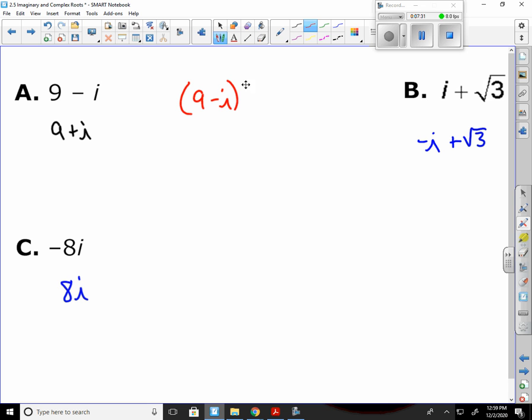When I have 9 minus i and I multiply it times 9 plus i, it gives me a quadratic of sorts. I just do the same thing I've been doing, distribute that. It gives me 81, then outside it gives me plus 9i. Inside, that's going to make it a minus 9i. And last, you're now going to have minus i squared. That's just using the FOIL method for distributing both terms.